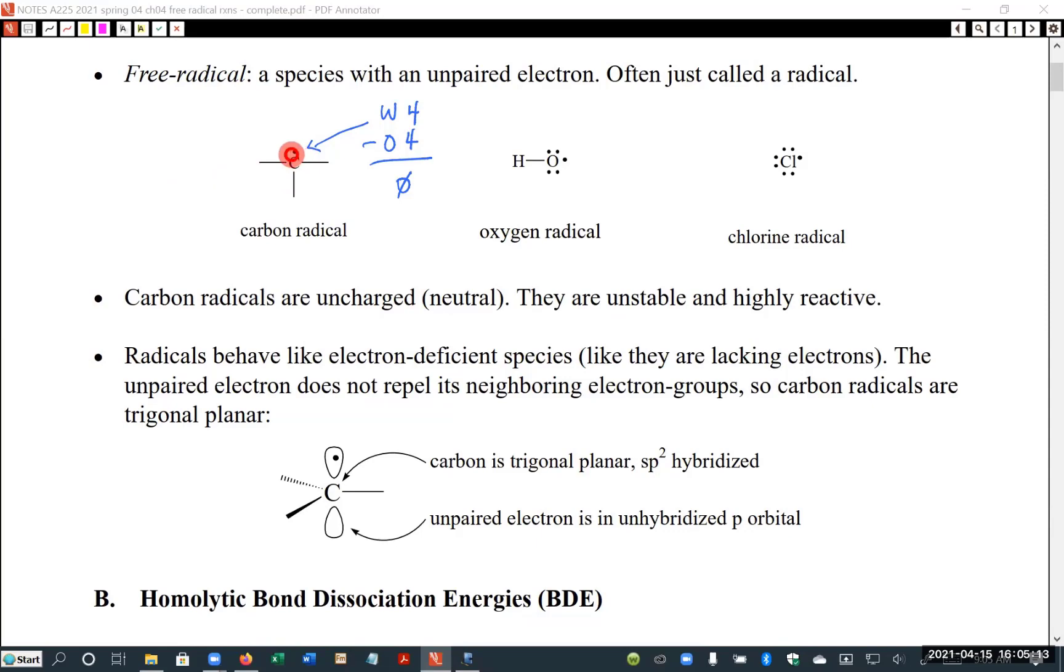In contrast, if we had two electrons right there, a lone pair on a carbon has a negative charge because we would then have four electron groups around that carbon. That would have a tetrahedral geometry and it would be tetrahedral. So the question is, if you have only one, what is it more like? Is it like it's missing an electron or is it like it has an extra electron? And it turns out the answer is that they behave like they are missing an electron—electron-deficient species.